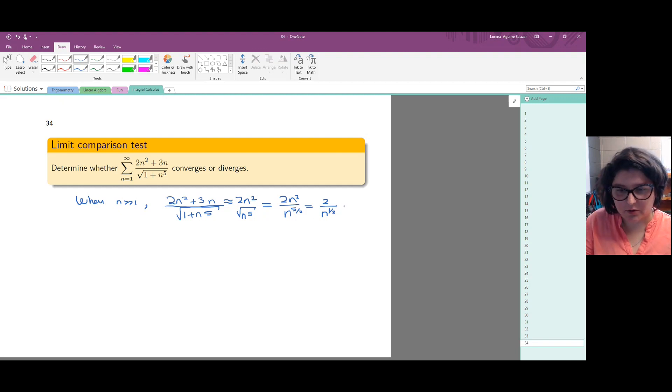Because we have this expression, our series roughly behaves like the series with 2 over n to the 1 half. What we suspect is that we have divergence because we get a p series with p equals 1 half when we work with 2 over n to the 1 half. So we suspect that we have divergence.